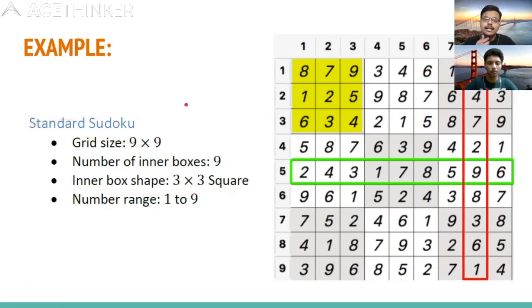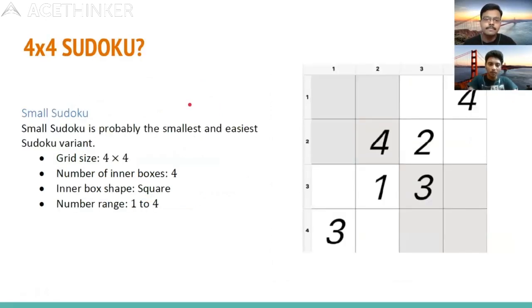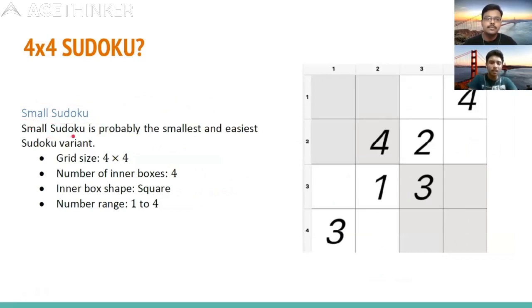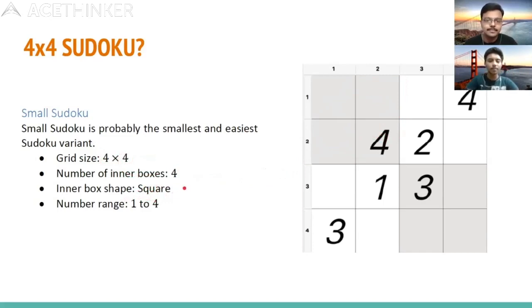Can another type of Sudoku be possible? Of course — other sizes with different n and different subgrid sizes are also possible. For example, here we have a 4×4 Sudoku with subgrids of size 2×2, and we have to fill the boxes from 1 to 4. The number range is from 1 to 4 as expected.